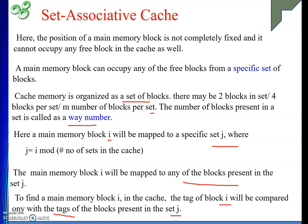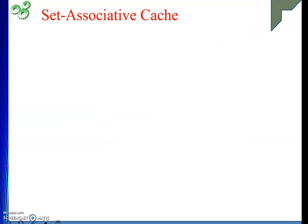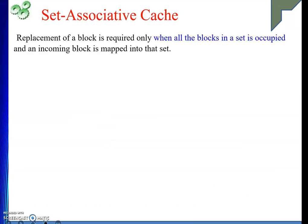So searching time is reduced. Replacement — the problem that was there in direct map — replacement of a block is required only when all the blocks in a set are occupied, none of them are free, and an incoming block is mapped into that particular set. Then only we need to do the replacement.